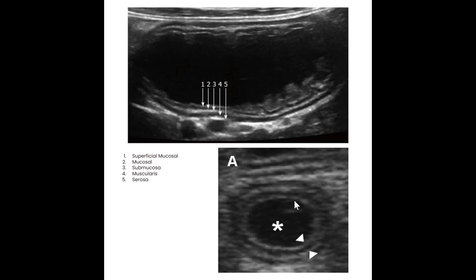In a cross-section of the intestinal tract with a little fluid in the lumen, we can see the superficial mucosal layer, the mucosal layer, submucosal, muscularis, and then the serosa surrounding it. Both examples have a little fluid within the lumen, making it easier to see all five layers. It's more common to see these collapsed on one another, where the submucosal echogenic layer blends in with the chyme or feces within the intestines.